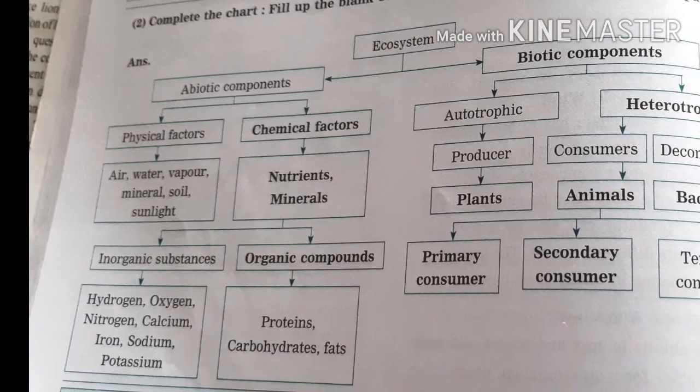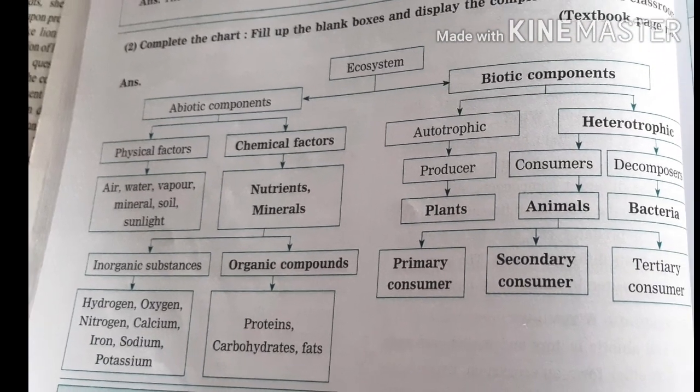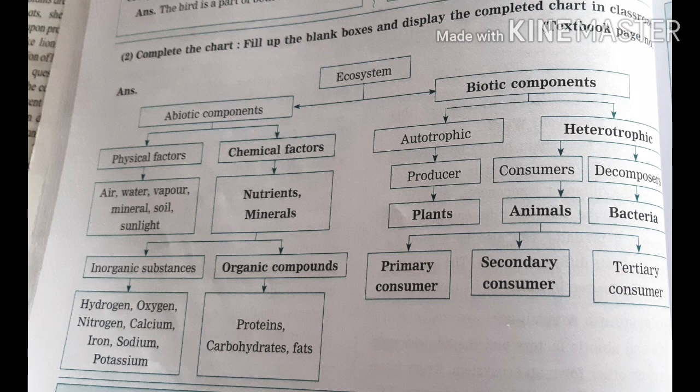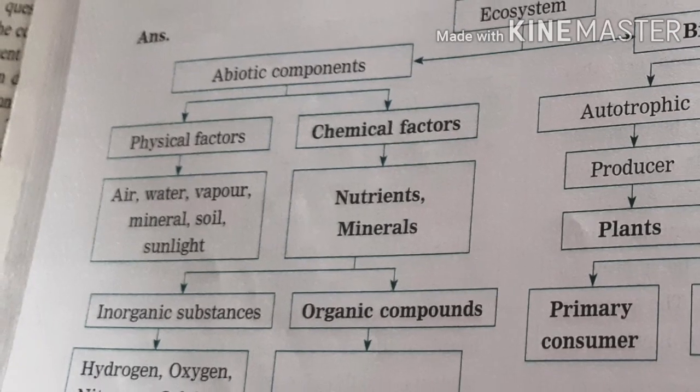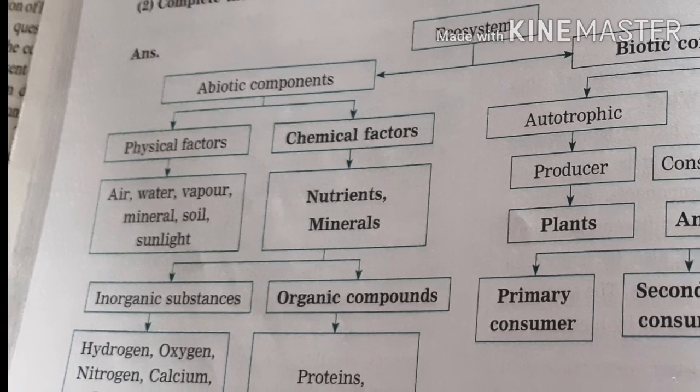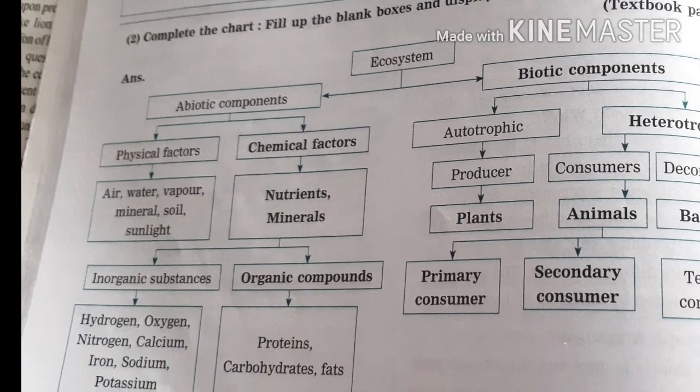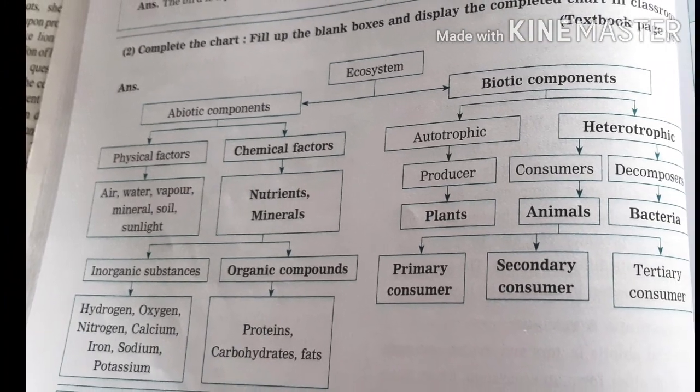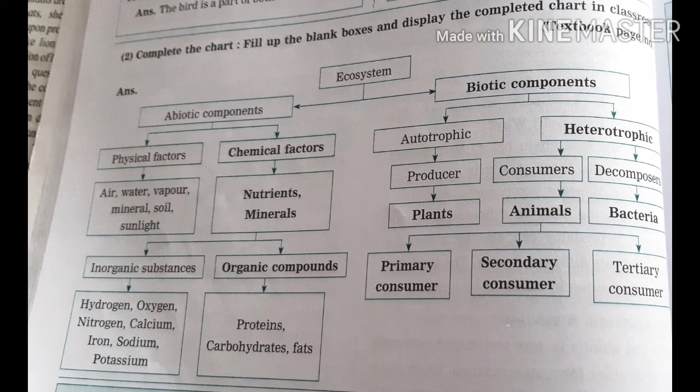Physical factors include air, water, vapor, minerals, soil, and sunlight. Chemical factors are nutrients and minerals. There are also two types of substances: inorganic substances and organic substances.